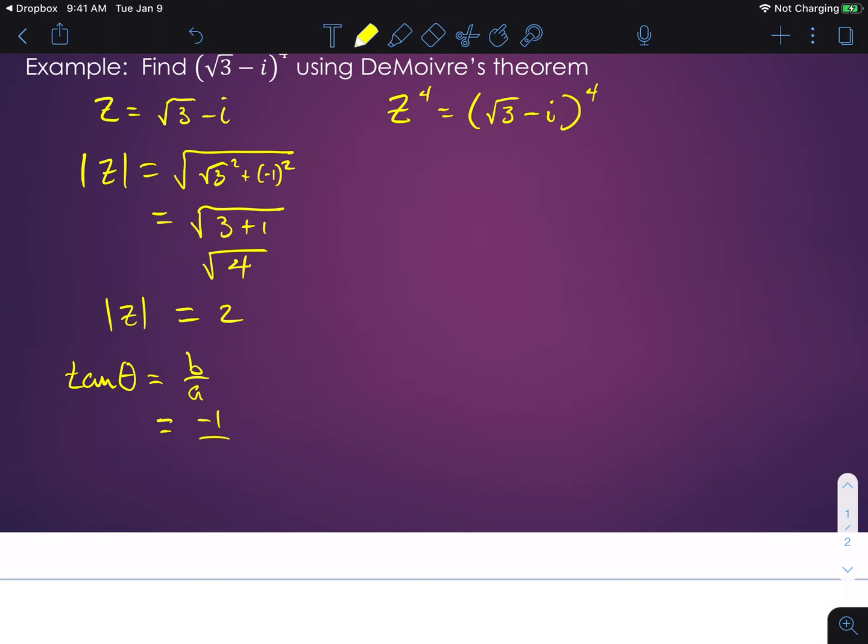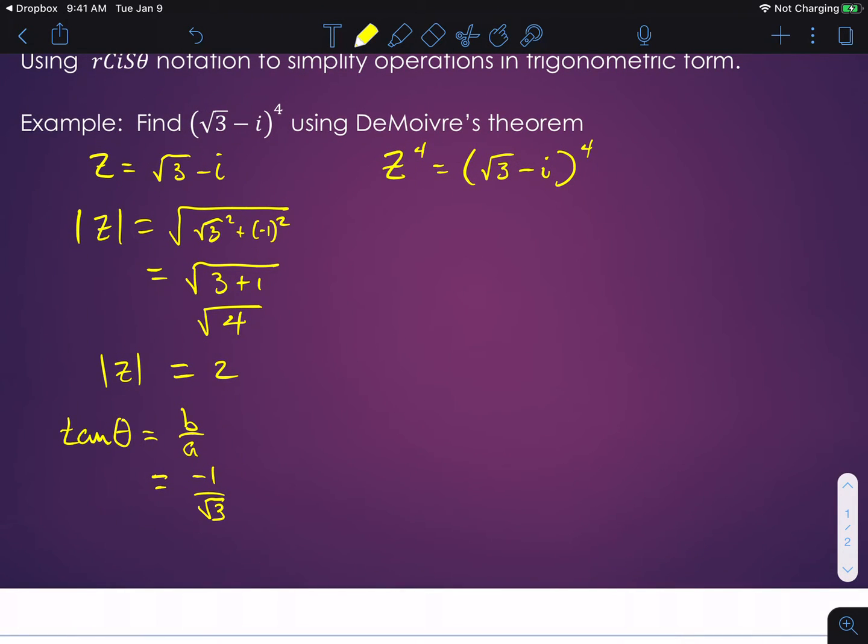So if you remember, we're really looking at something that looks like this now, where this is √3 and we're going down to -1, and that makes our angle here a negative π/6. But we're going to call that 11π/6 so we just keep it in positive form.